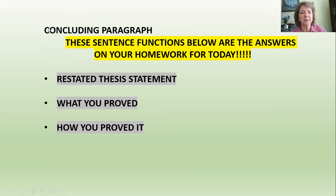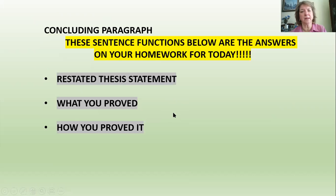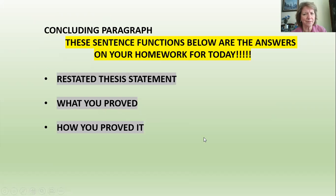Now look at this — the concluding paragraph. These sentence functions are actually the answers on your homework for today. It's a giveaway! Restated thesis statement, followed by what you proved, followed by how you proved it. The things in gray are the answers that will go at the bottom of your worksheet attached for today's homework. You're going to see an entire copy of the outline, the concluding paragraph will be in a larger, bold, italicized font so it stands out. You'll be asked what these three sentences are doing — first one restates the thesis, second tells what you proved, third tells how you proved it. Those are the answers.